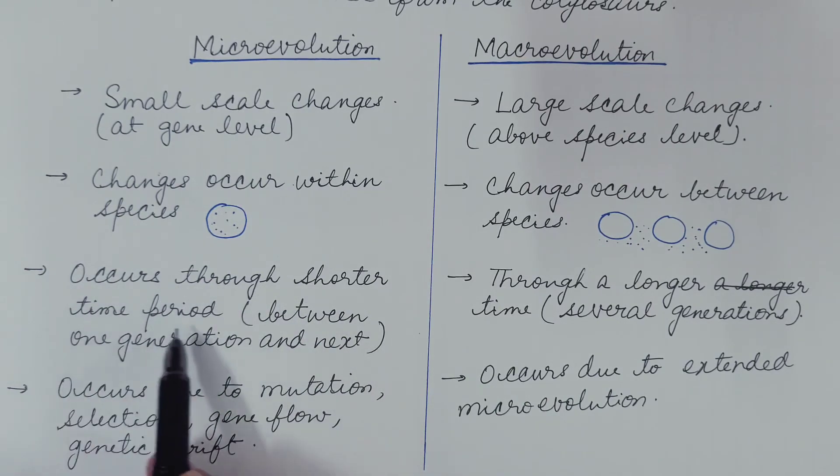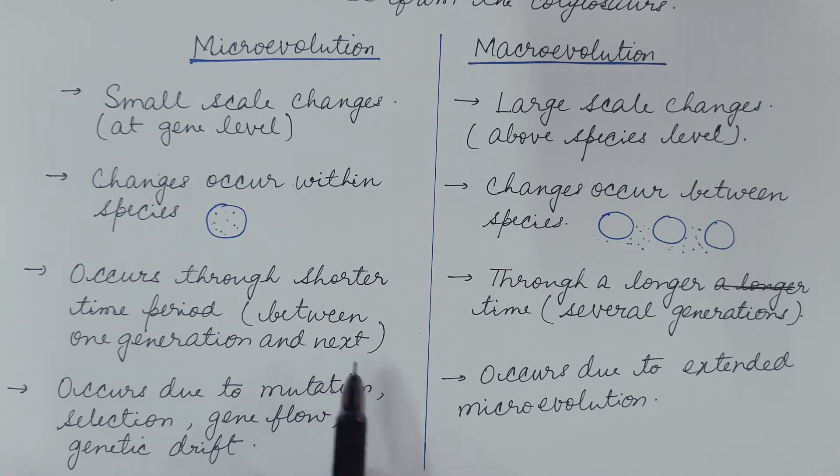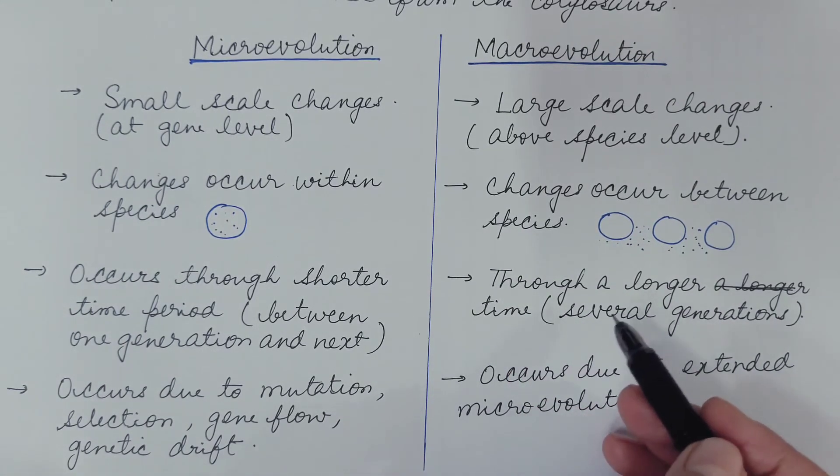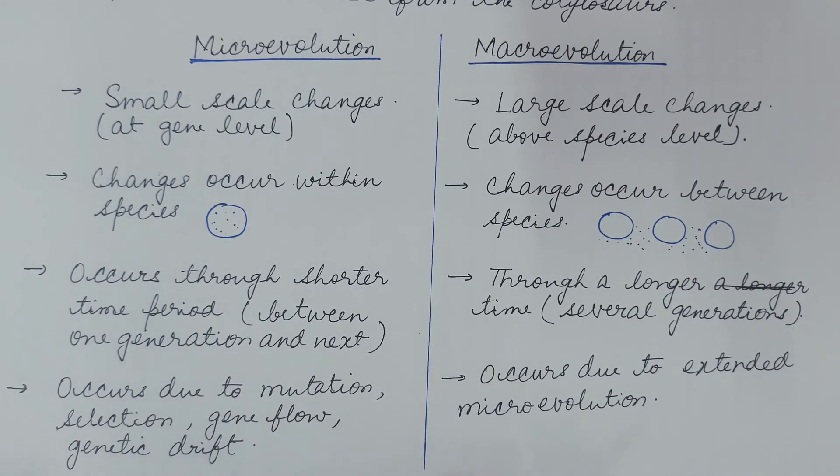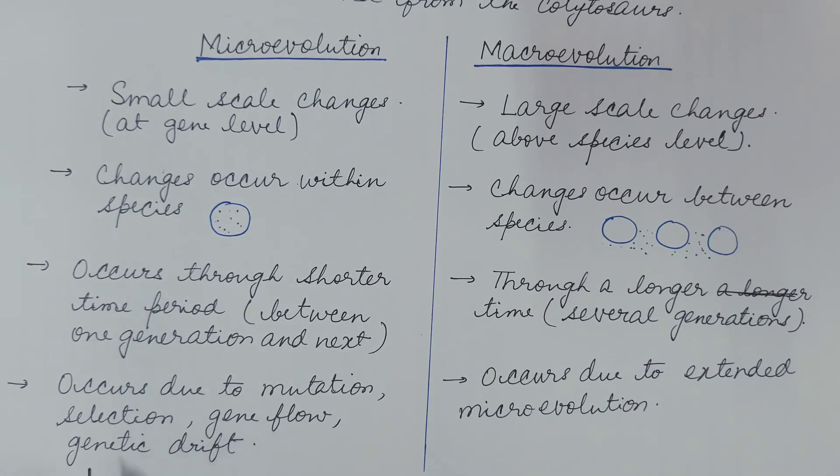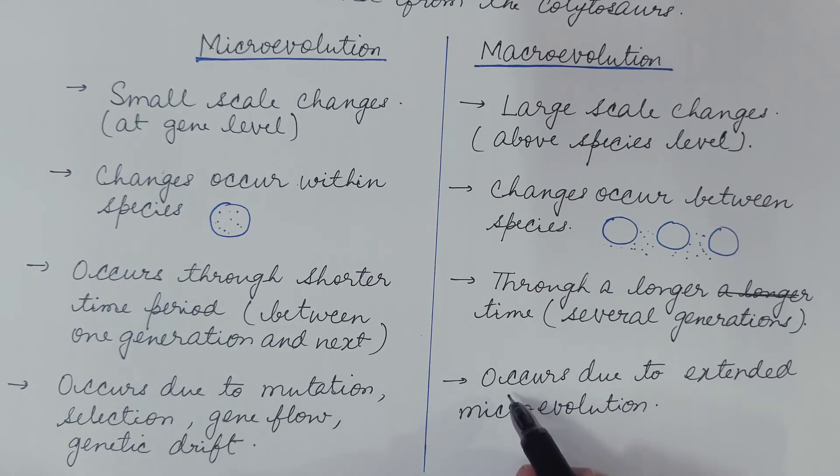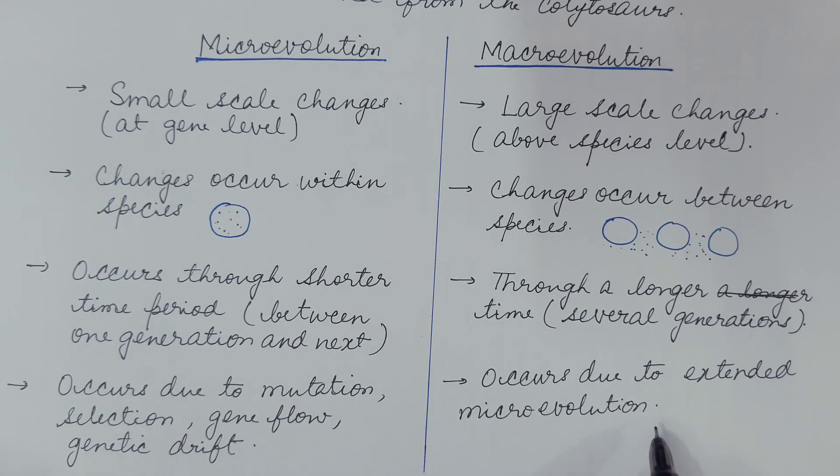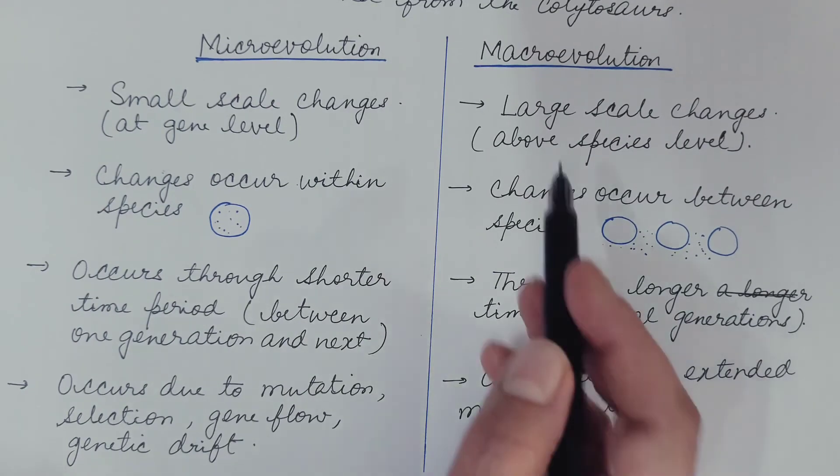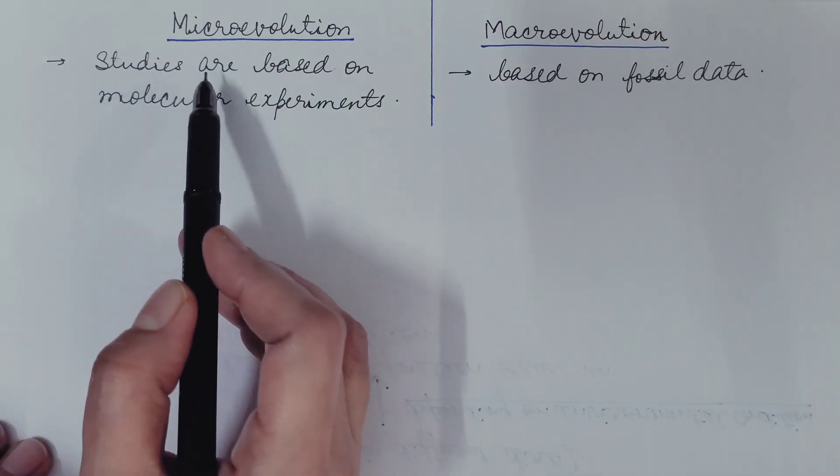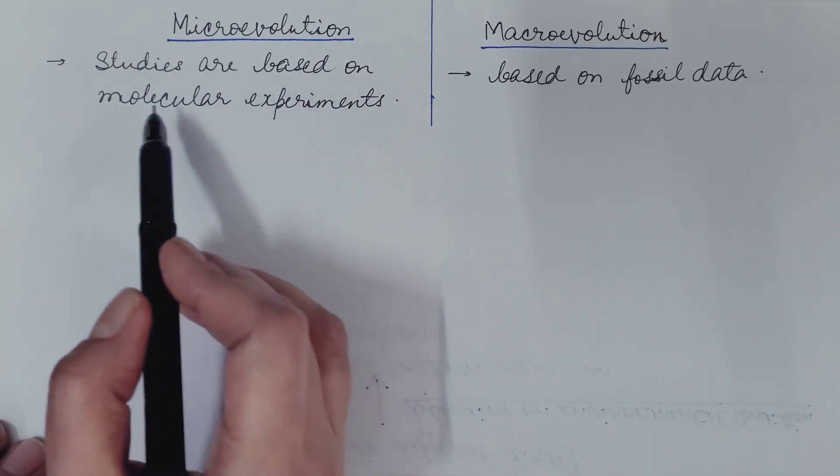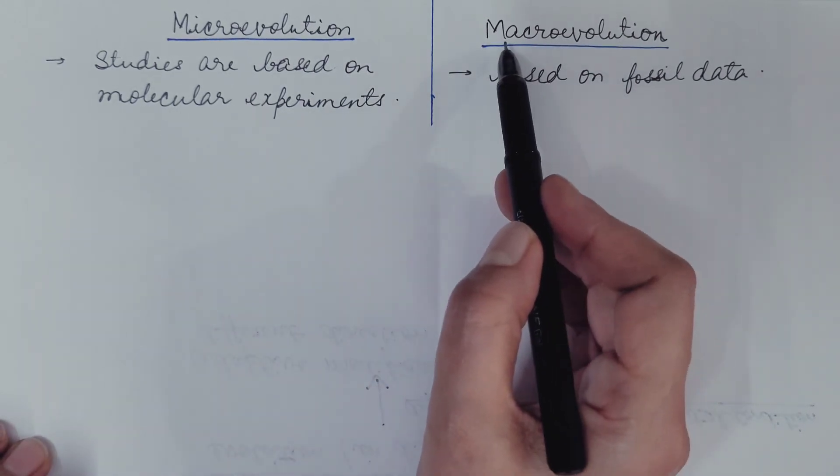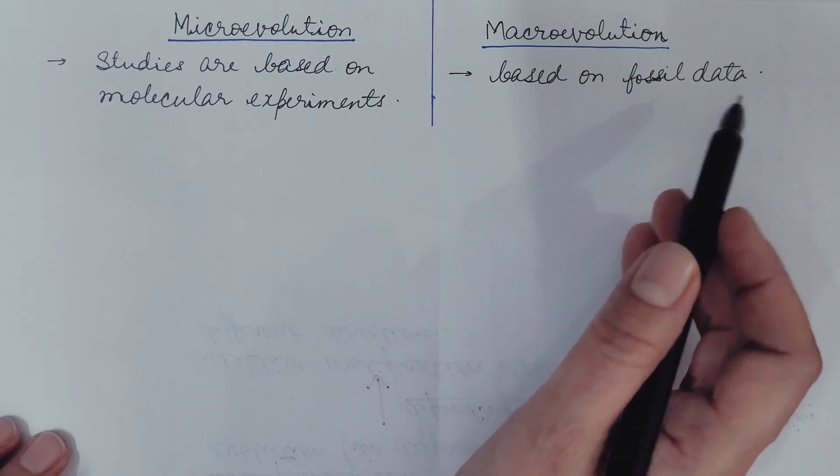Microevolution occurs through shorter time period between one generation and next. It occurs through a longer time period through several generations. It occurs due to mutation, selection, gene flow, genetic drift. Macroevolution also occurs due to these forces. But it occurs due to the extended microevolution. That is when microevolution takes place for longer period through several generations, then it leads to macroevolution. Studies of microevolution are based on molecular experiments. Studies of macroevolution are based on fossil data.